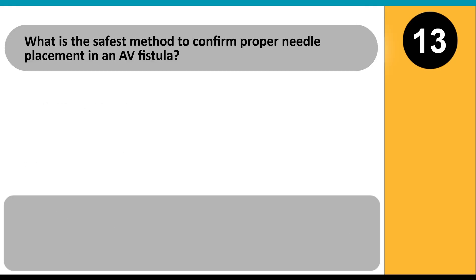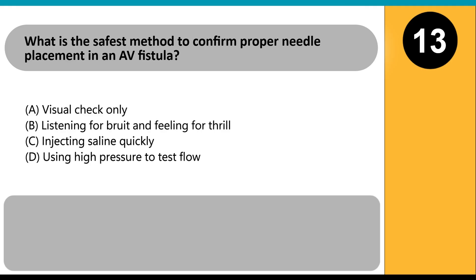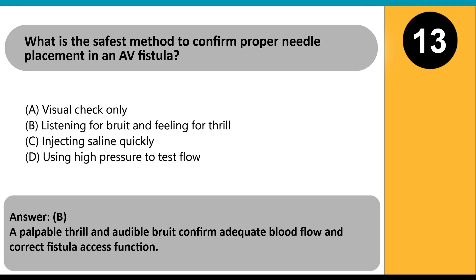What is the safest method to confirm proper needle placement in an AV fistula? A. Visual check only. B. Listening for bruit and feeling for thrill. C. Injecting saline quickly. D. Using high pressure to test flow. Answer B. A palpable thrill and audible bruit confirm adequate blood flow and correct fistula access function.